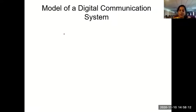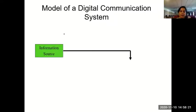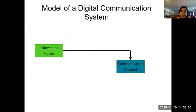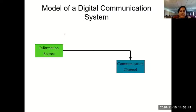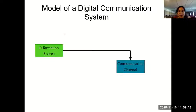Let's look at the model of a digital communication system. You have the information source — something which generates data, either in the form of bits, voice, or video. Basically, information is the idea which originates in the human mind and takes different forms: voice or speech, an image, temperature, pressure. Any device which gives out information is a source of information.